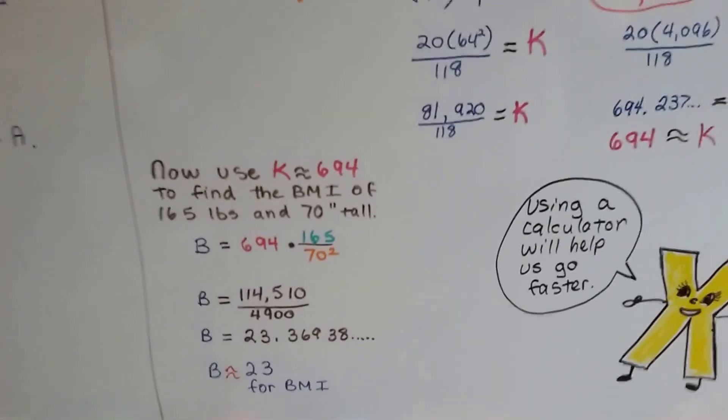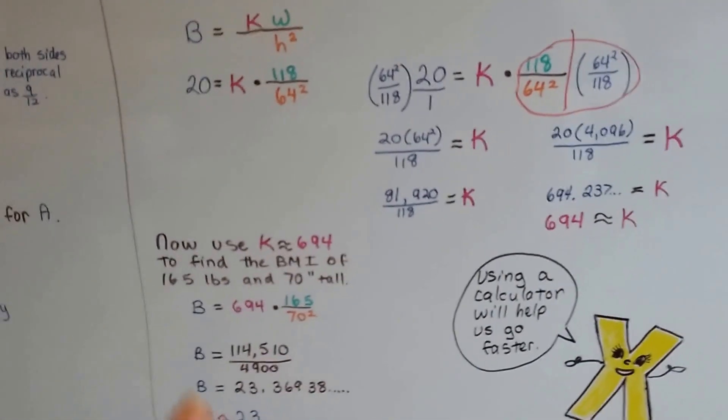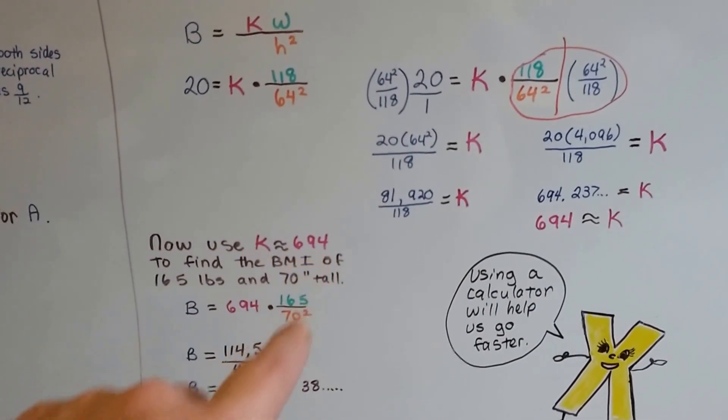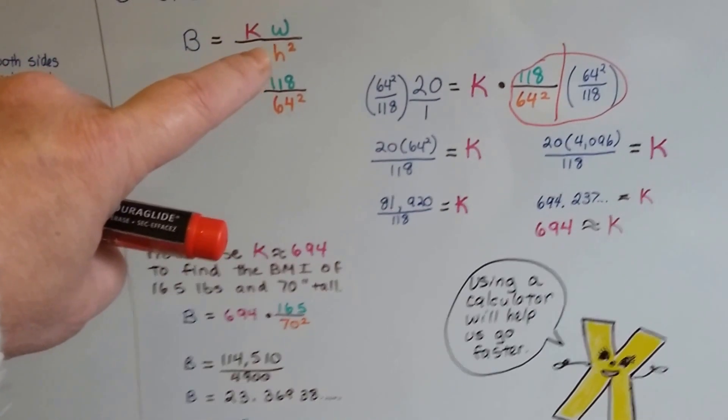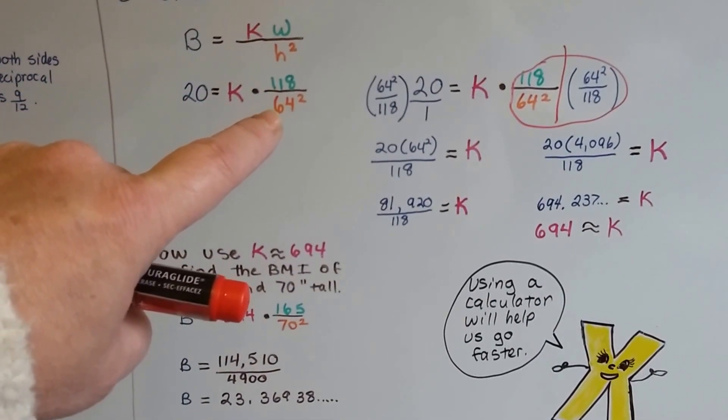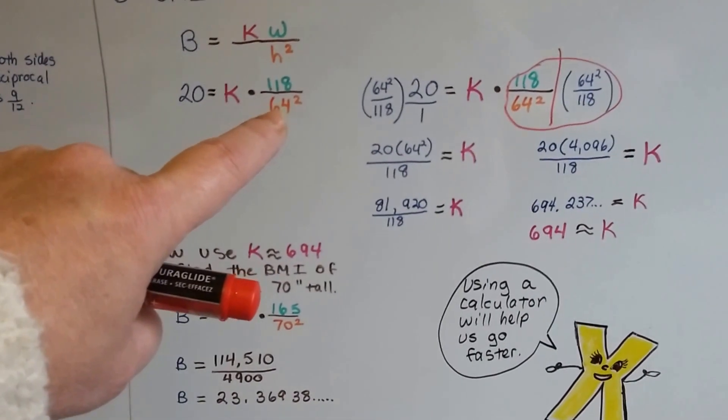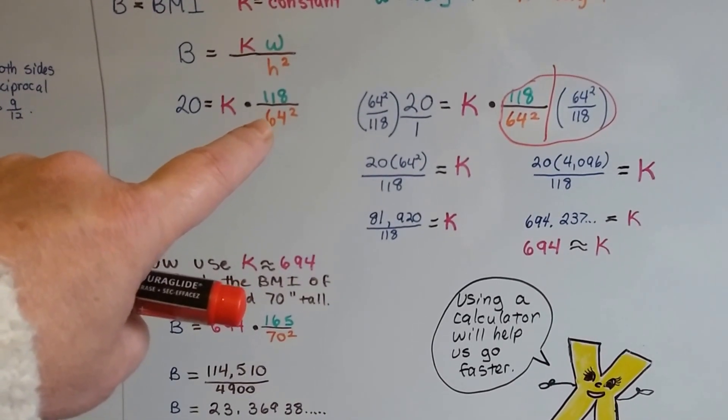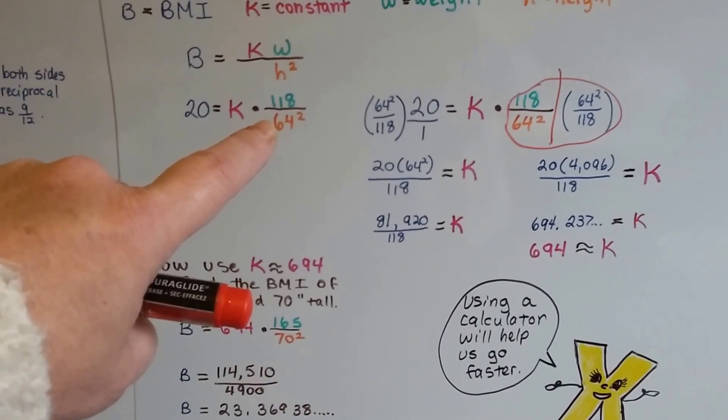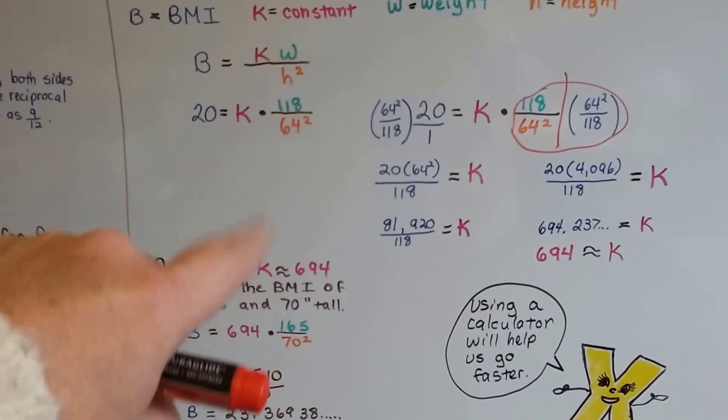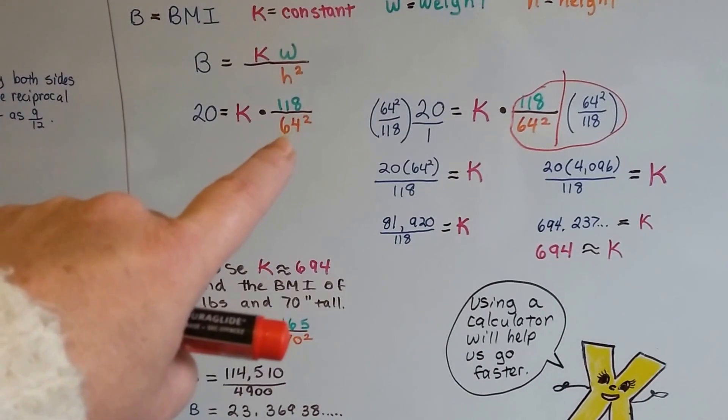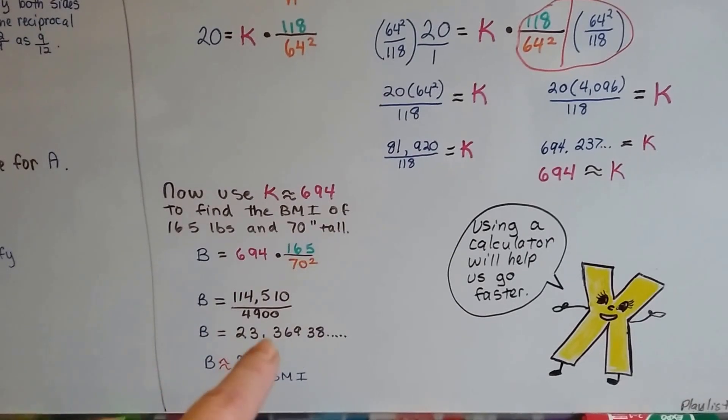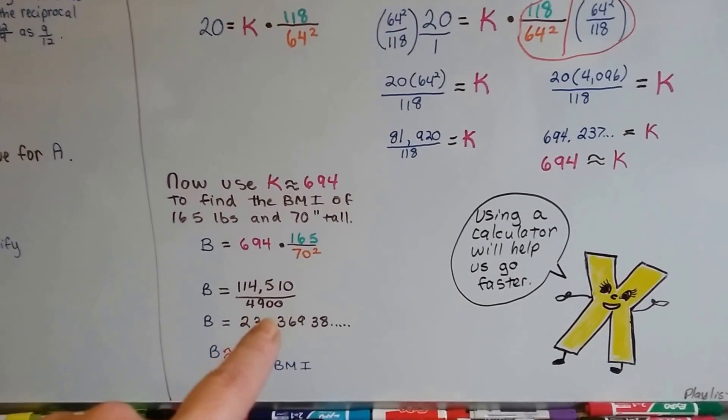Using that calculator is going to help us go faster. So if you use 694 for K, write that down, and then put your weight on top and whatever your height is in inches. But remember you have to square it. So if you're 5 feet tall, that's 60 inches. If you're 5 foot 2, you're 62 inches and so on. Then you'd have to do that times it to itself, like the 70 inches times 70 inches became 4900.